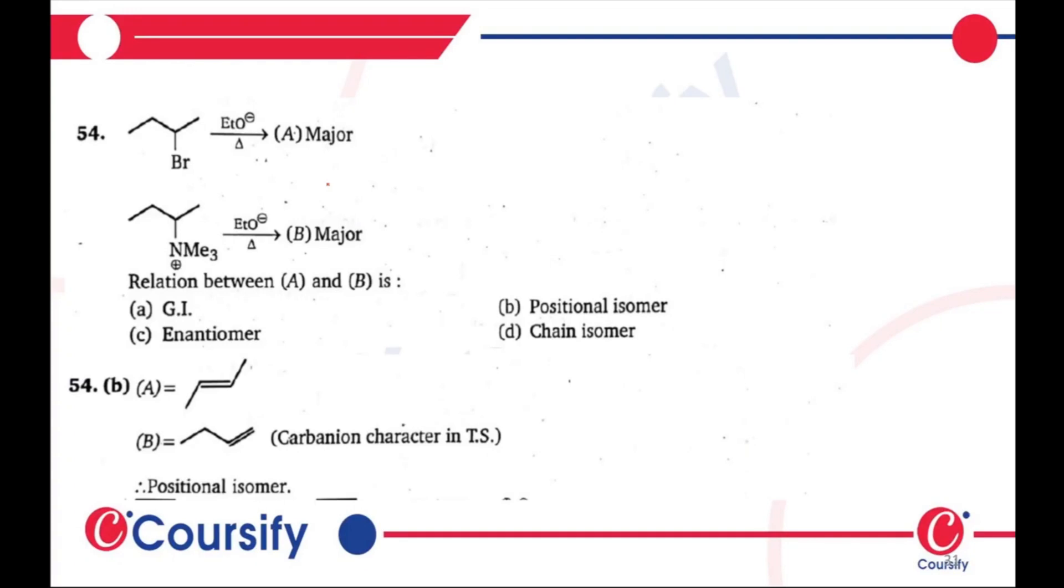So the answer to the question is B, that is positional isomer. If you have trans or cis, then what would you say? This is geometrical isomer.